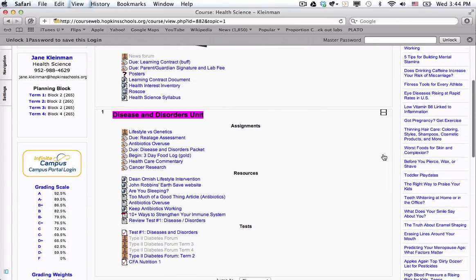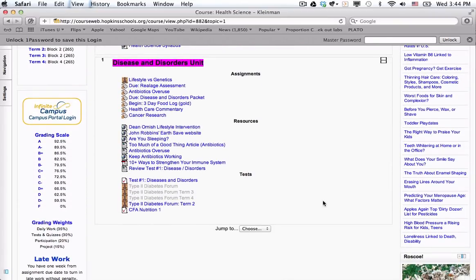And then if you wanted to get to another topic block, you'd use the jump down menu. That's an individual setting. If Jane collapsed those blocks and was using the jump to menu, that does not mean that that same thing will occur for her students. That's an individual setting.